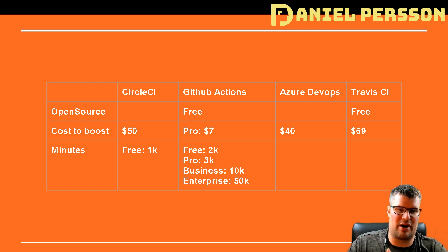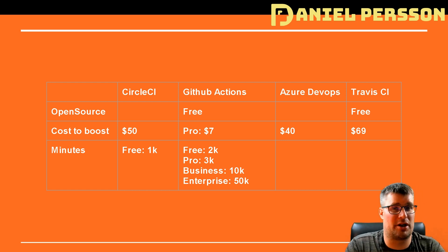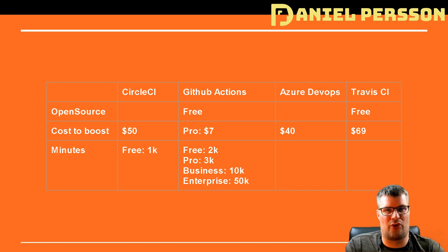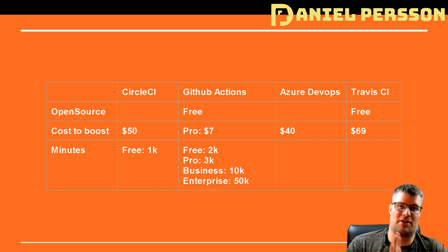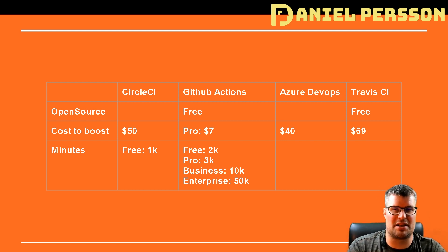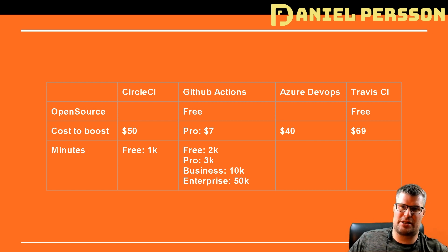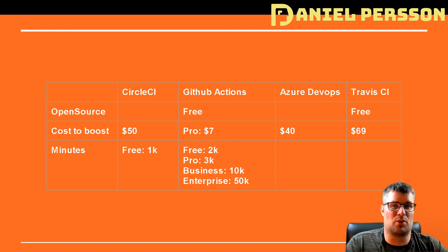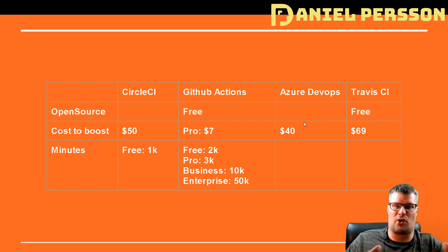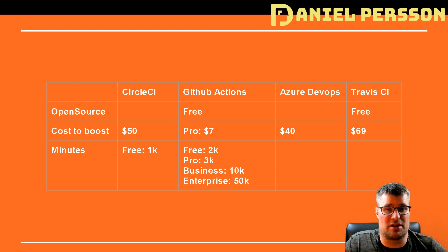Travis CI charges $69 for a similar setup. If you boost Azure DevOps further, every extra concurrent workload costs $40, so running three in parallel means two extras at $80. The same applies for CircleCI and Travis CI, though some of them are not linear and may be cheaper as you get more concurrent workloads.